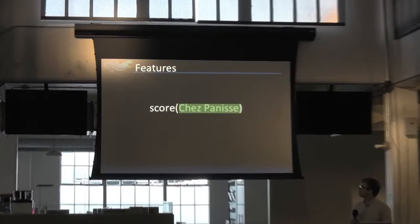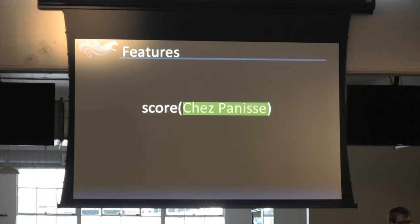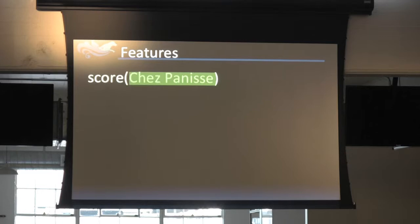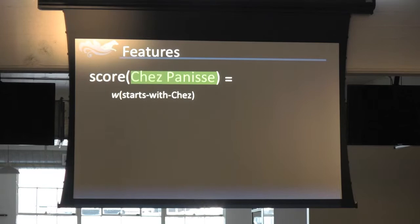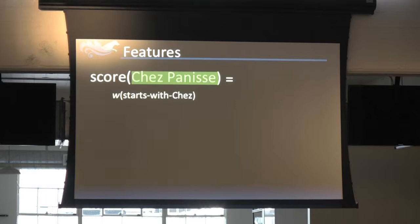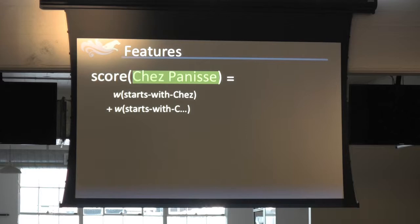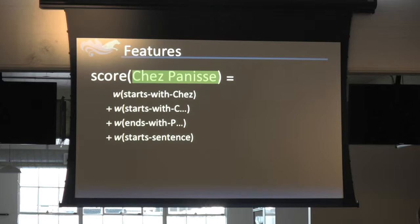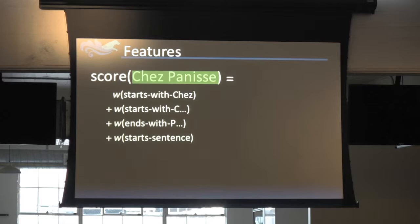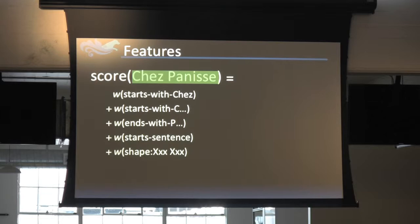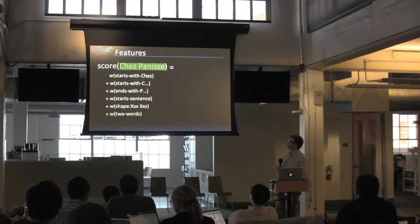The score is determined by a feature function — a sum of a bunch of weights. For Chez Panisse, we might say it starts with 'Chez,' which is a good indicator it's an organization. It starts with a capital C, a good indicator it's a named entity. It ends with an uppercase P, also important. It begins the sentence, which is an indicator entities tend to come at the beginning. You might include the shape — two capitalized words — and maybe that it's two words long, since people, places, and things tend to be relatively short.